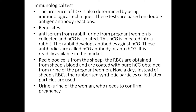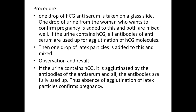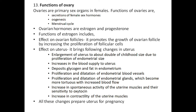Immunological tests: the presence of HCG is determined using immunological technique based on antigen-antibody reaction. Anti-serum is obtained from a rabbit by injecting HCG isolated from the urine of a pregnant woman; the rabbit develops antibodies against HCG. To perform the test: one drop of the HCG anti-serum is placed on a glass slide, then one drop of urine from the woman to be tested is added and mixed. If the urine contains HCG, the antibodies of the anti-serum are used up in agglutination of the HCG molecules. One drop of latex particles is then added; if antibodies are fully used, there is no agglutination of latex particles, confirming pregnancy.